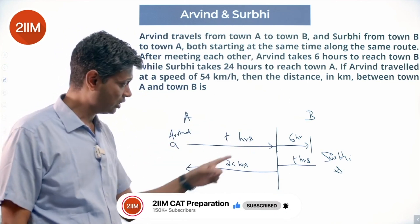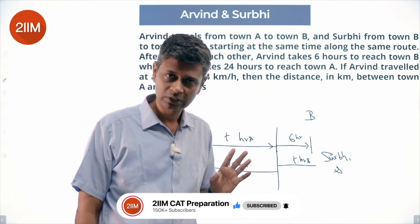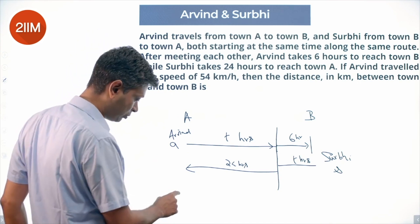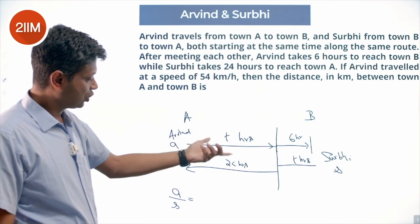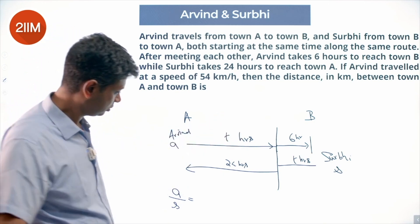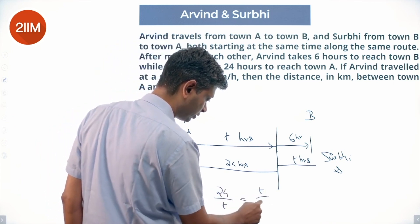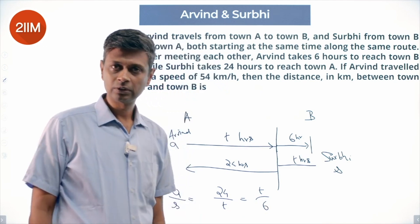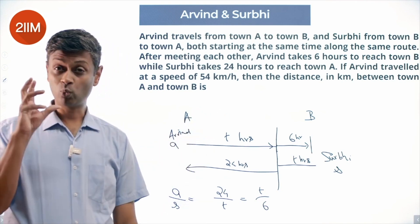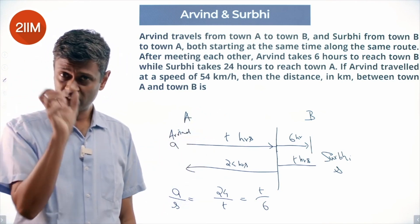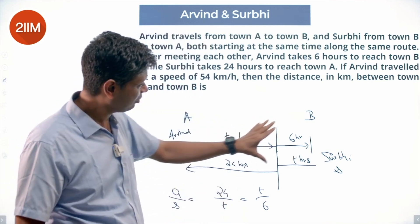A times T equals S times 24. A times 6 equals S times T. The ratio of their speeds — A by S — is the reciprocal of the ratio of their times. So we get: 24 by T equals T by 6. If Arvind and Surbhi take T hours and 24 hours for one distance, and 6 hours and T hours for another distance, the ratio of the times they take should be the same.